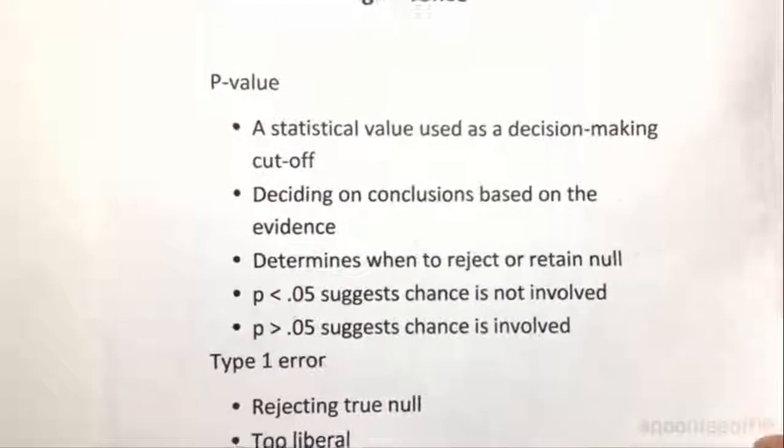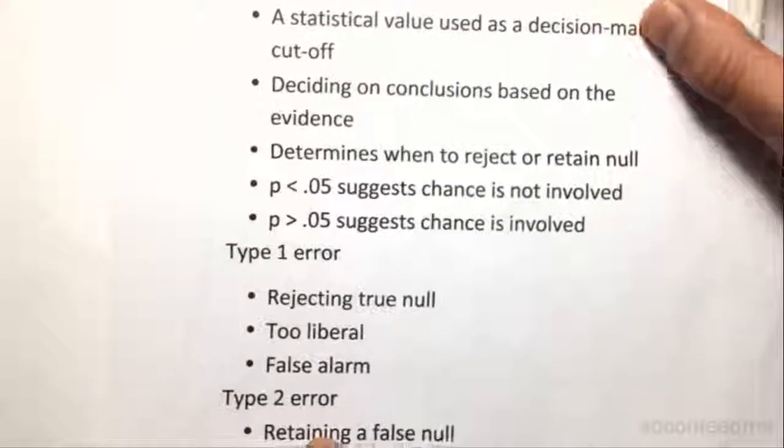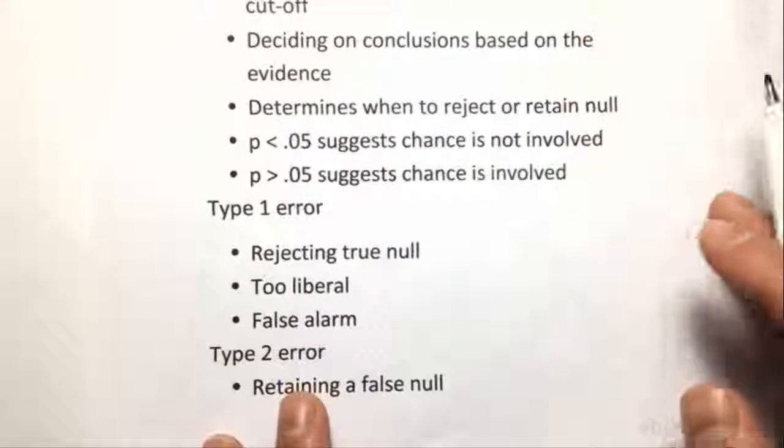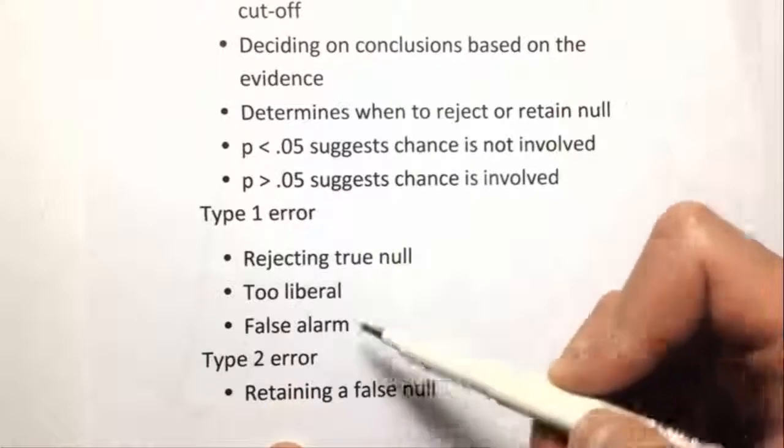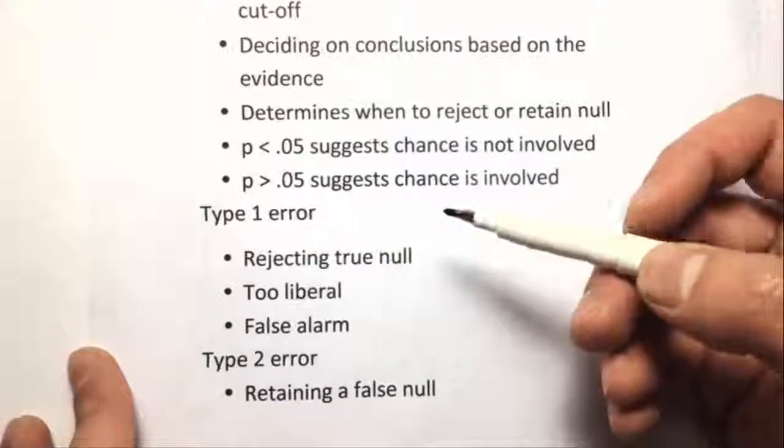So we'll look at what that means in a second. But another thing you might be asked to think about is errors, the two different types of errors. Now, type 1 error is rejecting a true null.